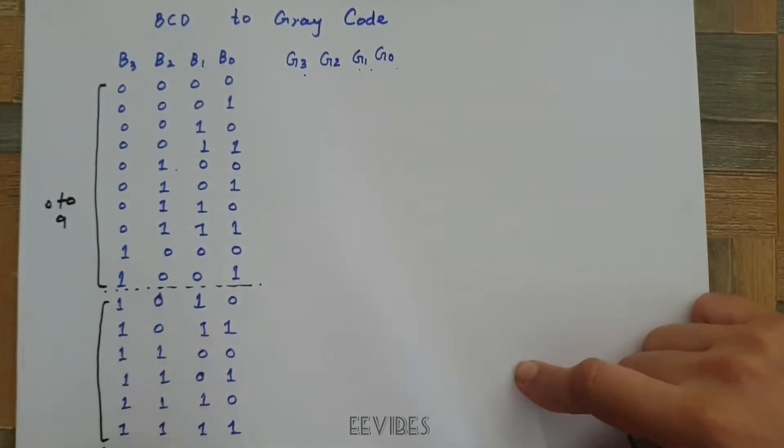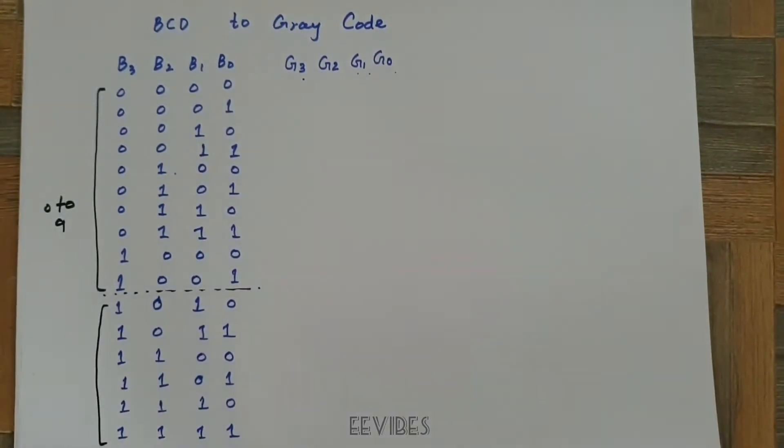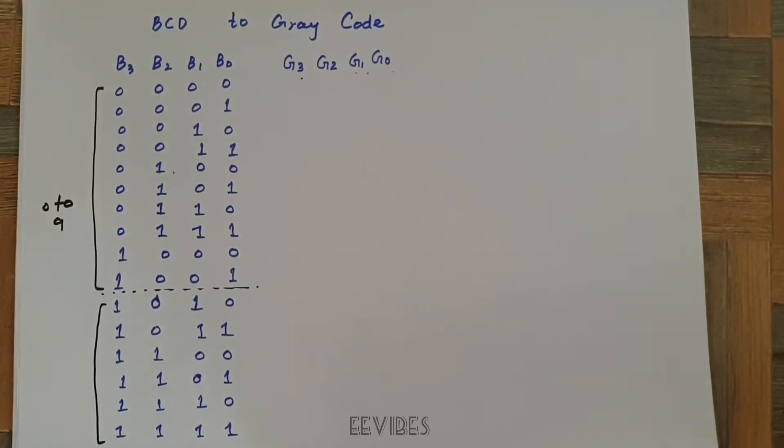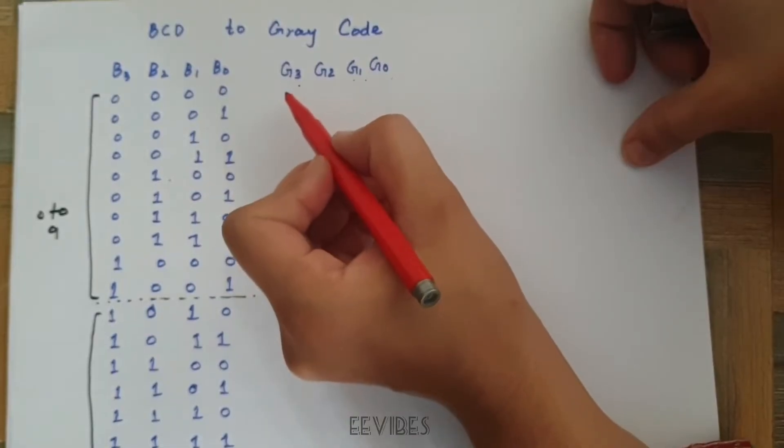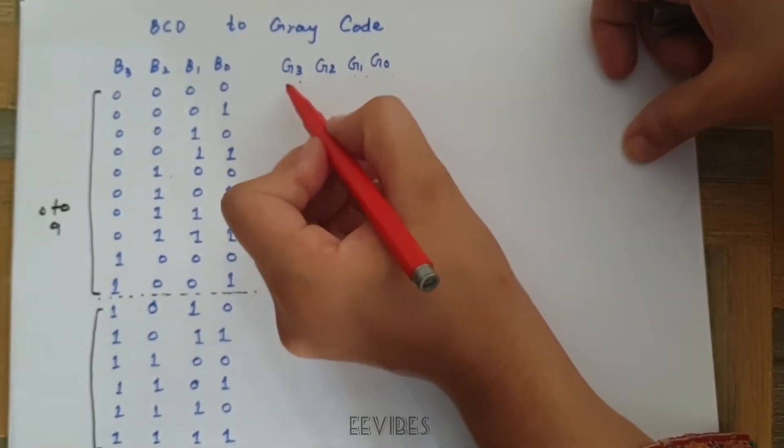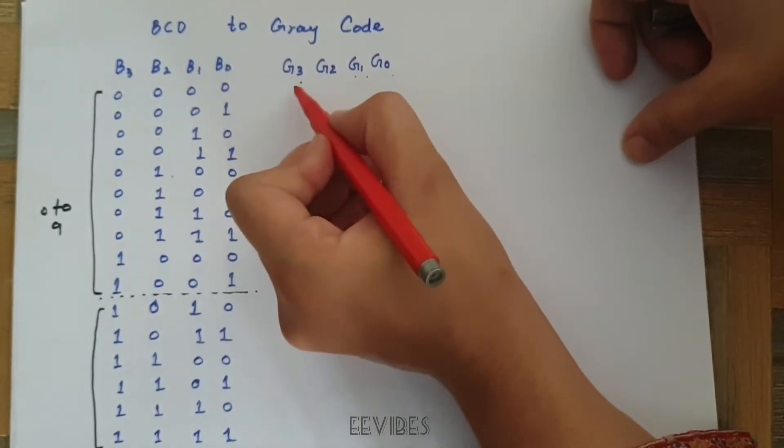This bit combination will actually give us the don't care conditions in terms of the Gray code. Now, let's see how we can generate the Gray code. I will repeat that again.